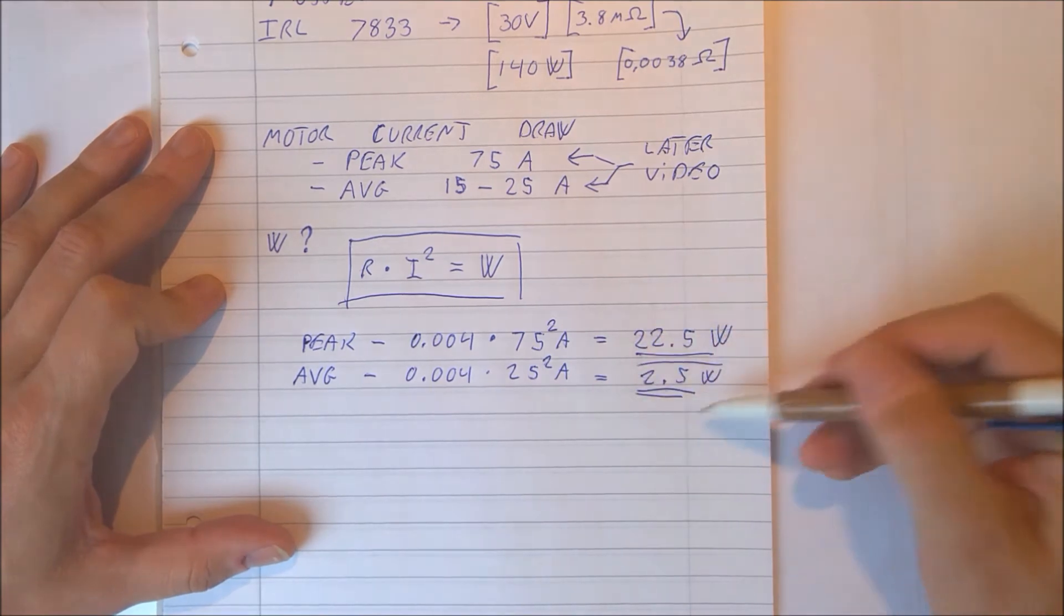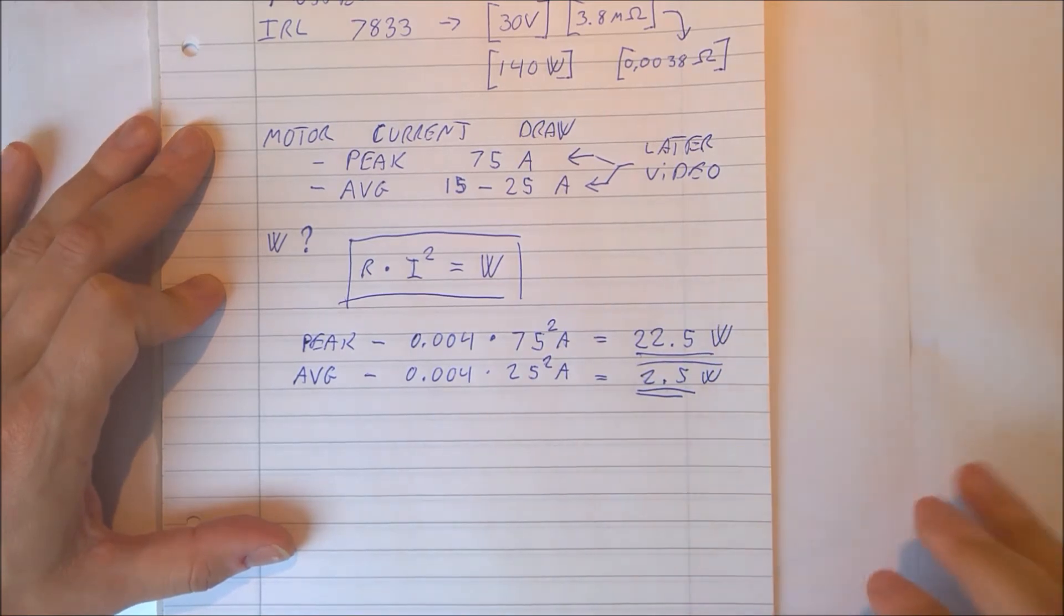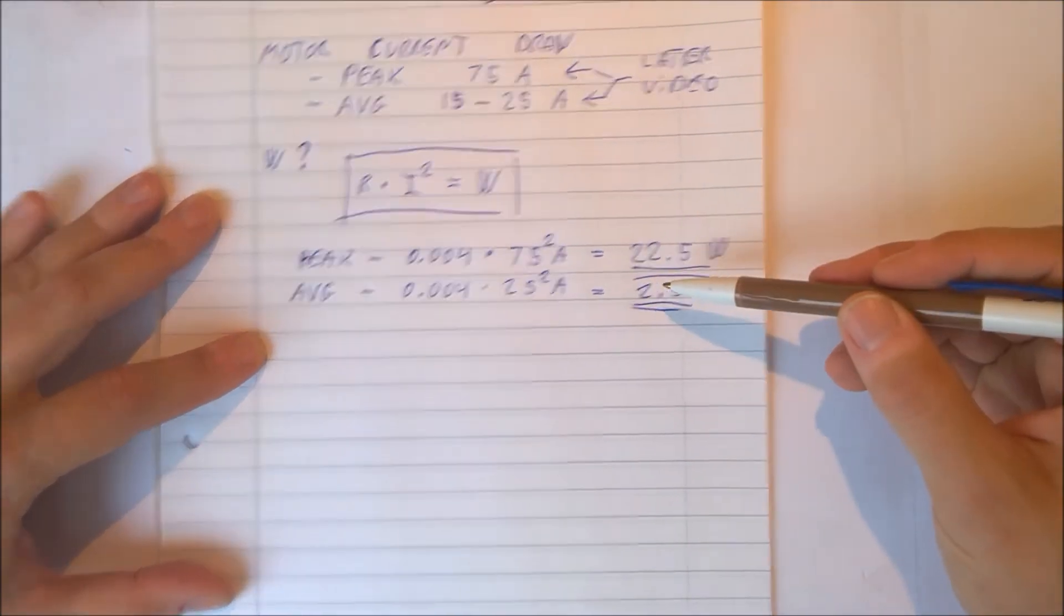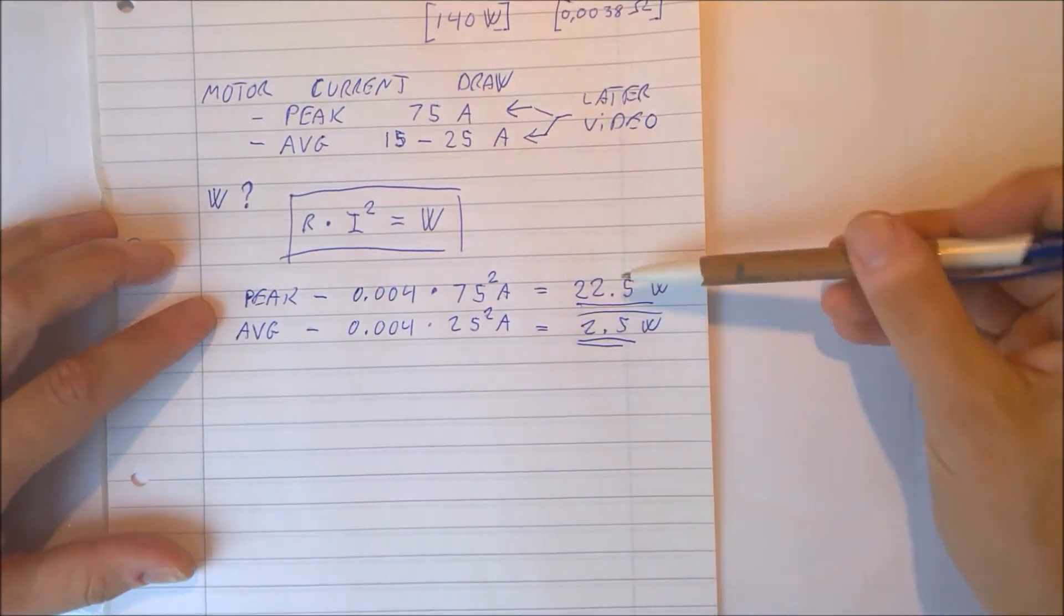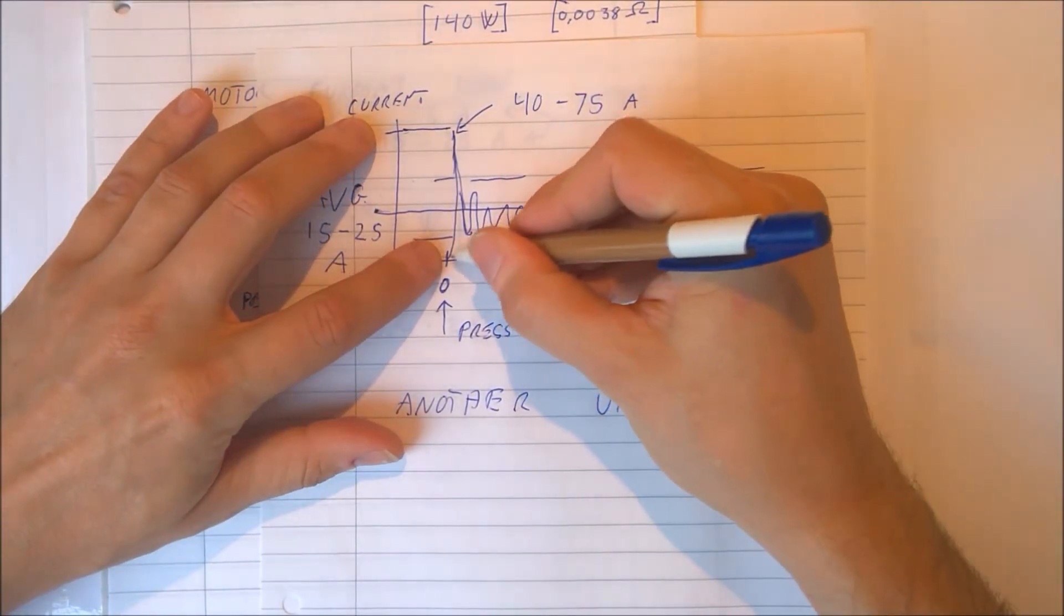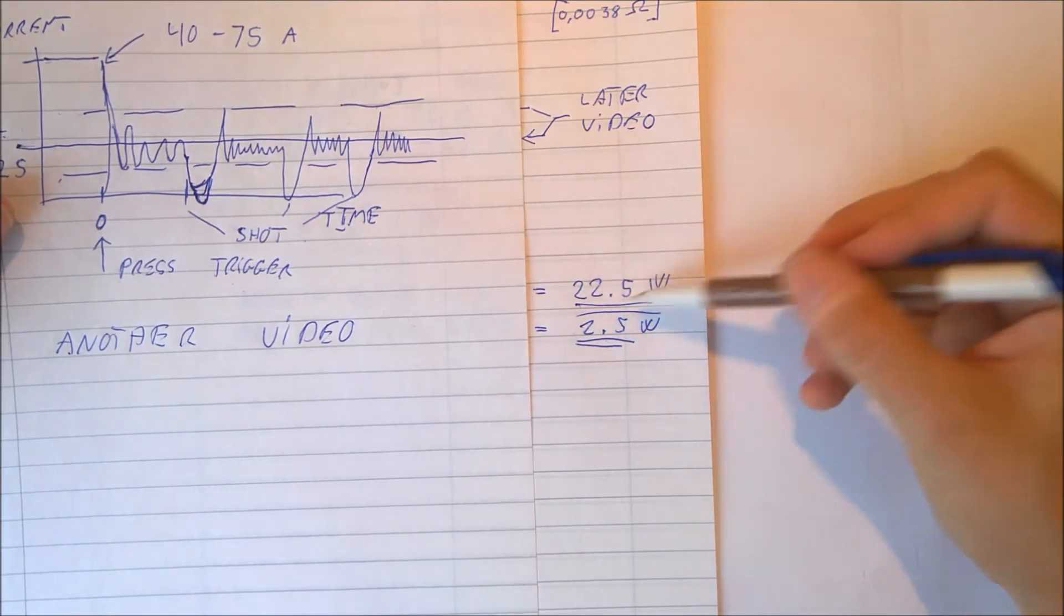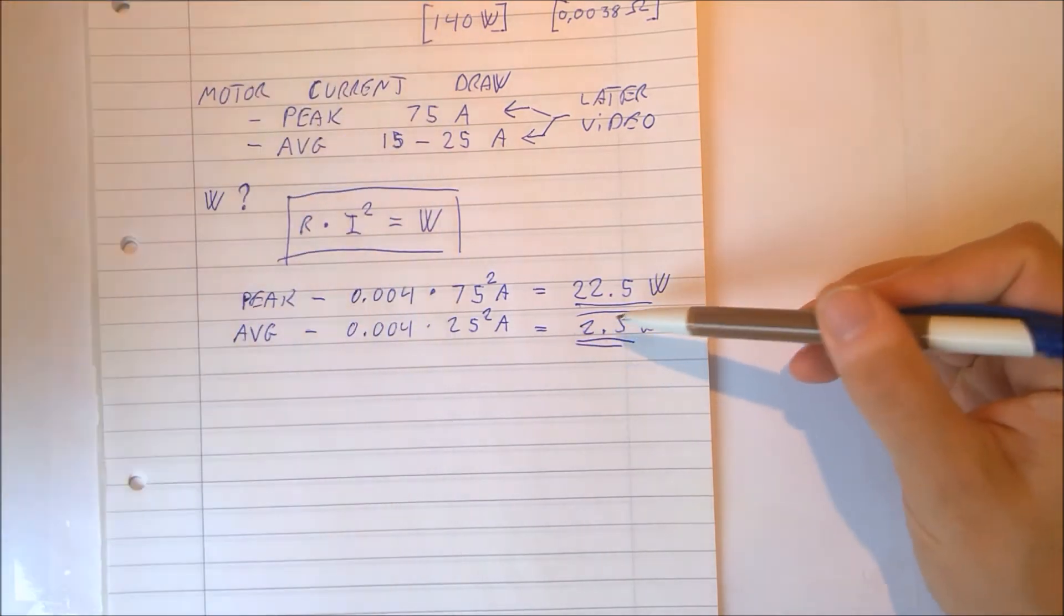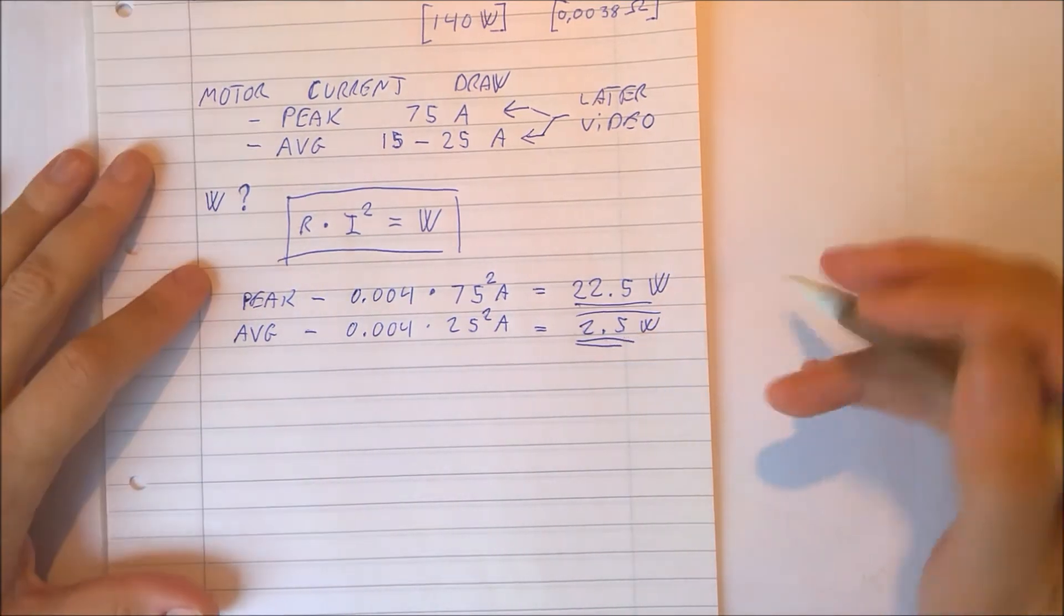So the MOSFET alone will dissipate this amount of power, and power equals heat. The peak value is just initially, so it's a very short amount of time that we need to handle this much, and we're talking maybe nanoseconds here. The most correct thing to do in this situation will be to take the average power and assume that we have to handle that amount of power.